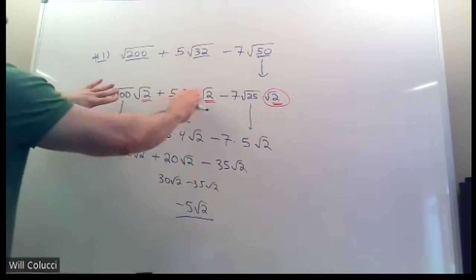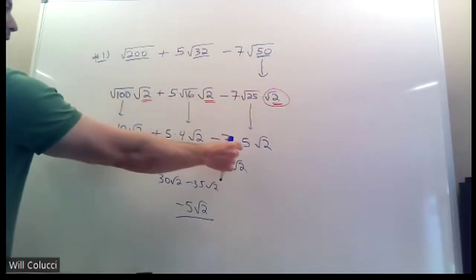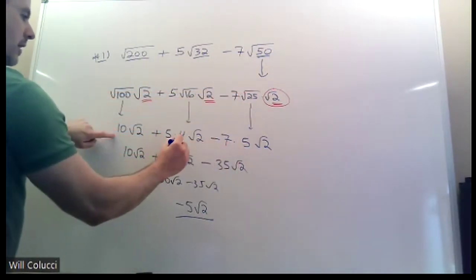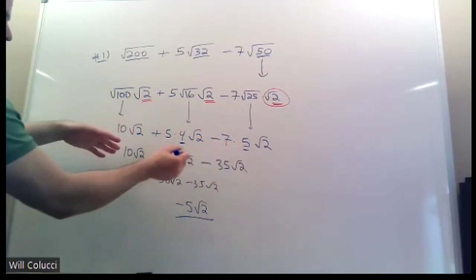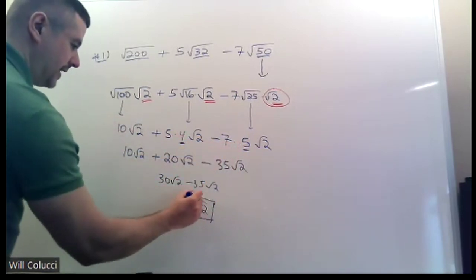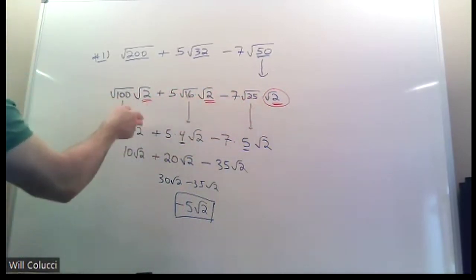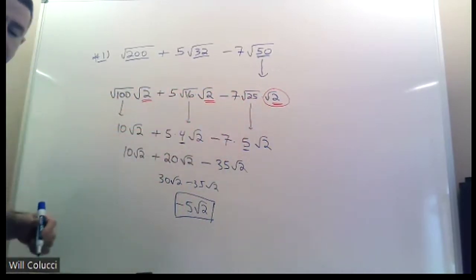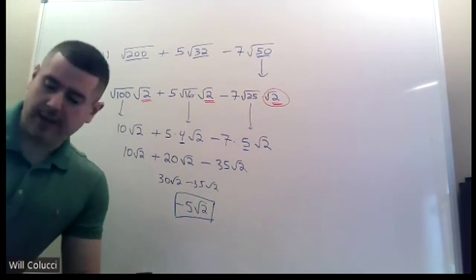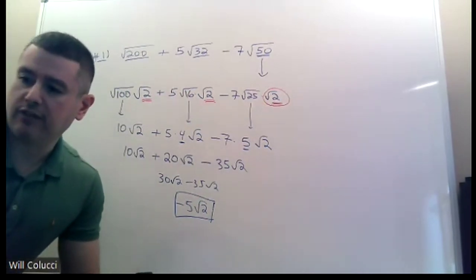At the end, once you've broken them all down and you've pulled the perfect squares out of jail, at that point, you're just adding and subtracting numbers. So, you know, that's not the hard part. The hard part is here. Breaking them down correctly and then taking them out of jail and multiplying them. At that point, it's just being careful with your signs and not doing anything silly.